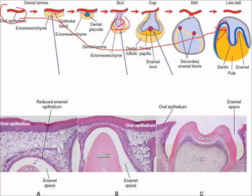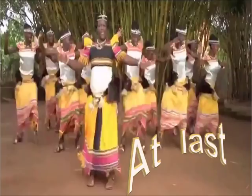The stages are: bud stage, cap stage, early bell and late bell stage. In this image below you can see fully mineralized enamel, the enamel space, and the oral epithelium. Thank you for listening. See you next week. Good luck.